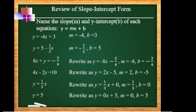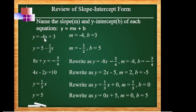Review the slope-intercept form. Let's name the slope m and y-intercept b of each equation. It should be in the form y = mx + b. For number 1, we have y = negative 4x plus 3. So ang m dito is negative 4 — x is not included, just negative 4. Therefore, we have negative 4 as slope and positive 3 as b.